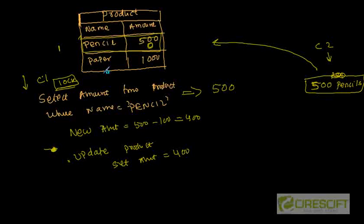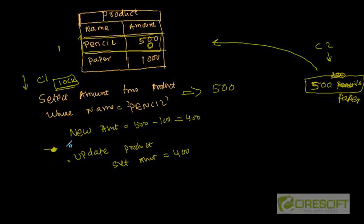In pessimistic locking, the assumption is that there will be a conflict that is going to happen. But let's say customer C2, instead of asking for pencil, is asking for paper — that means he is going after the second row, not the first row. In that case, even if you lock this thing, you are unnecessarily creating a blocking thing. However, the action happens on some other row. If in this product table we have 1000 products, what is the probability of hitting one pencil simultaneously? It may be 1 in 100,000. So instead of locking at the beginning, what can we do?